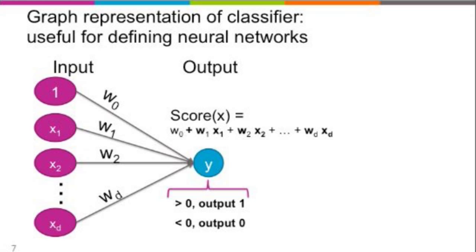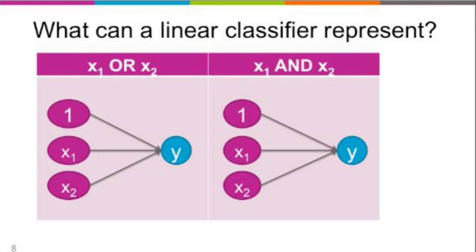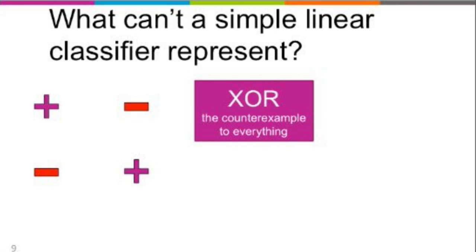This is a linear classifier — very simple, most of you probably know it. It can capture a lot of operations. In the case of Boolean algebra, OR and AND operations are two types that are easy to capture using linear relations — we just sum up some weights and get the result, with binary inputs 0 and 1. However, linear classifiers are kind of limited because they cannot represent everything. One example is the XOR operation, where we actually need more powerful tools.